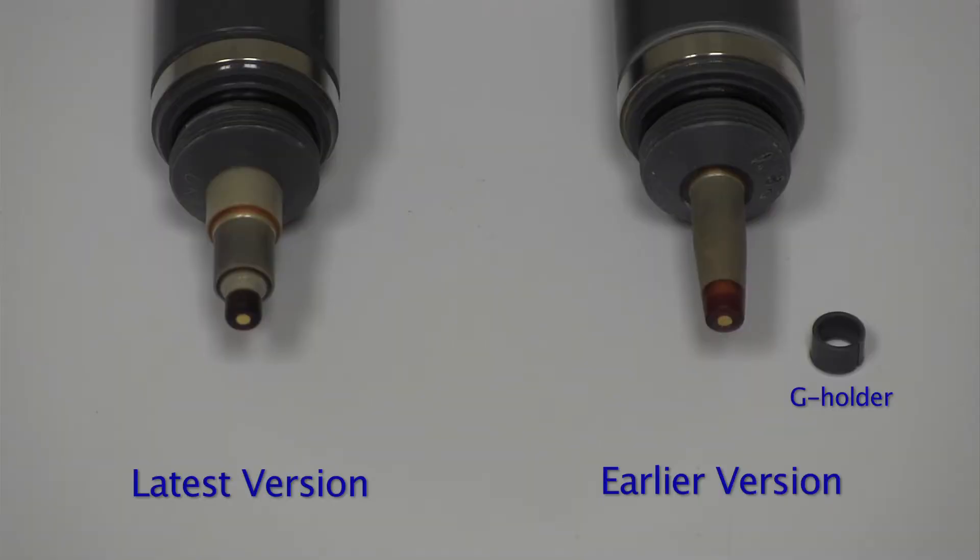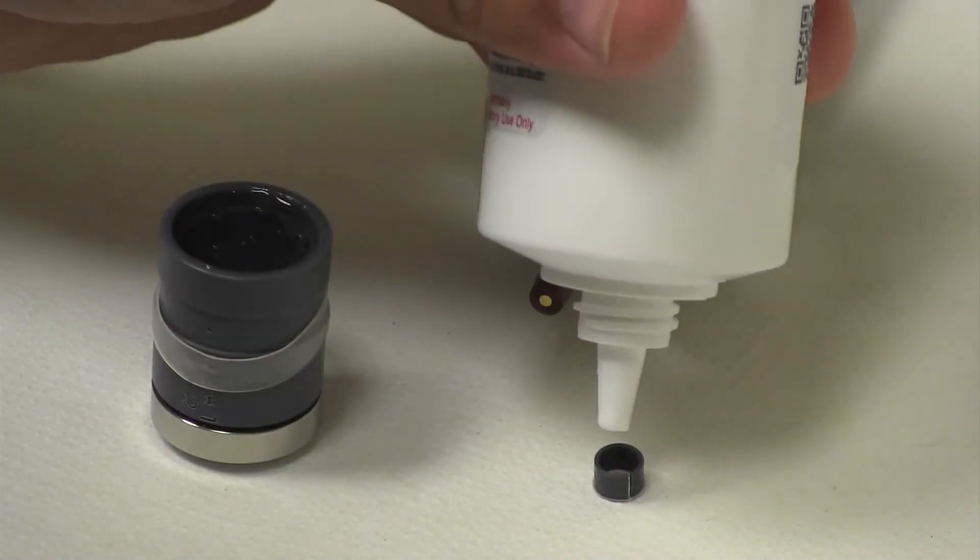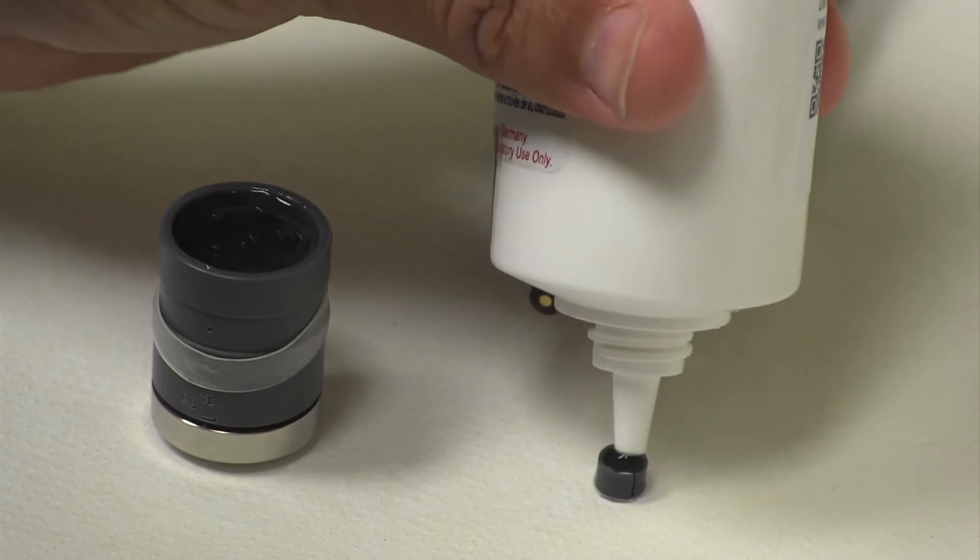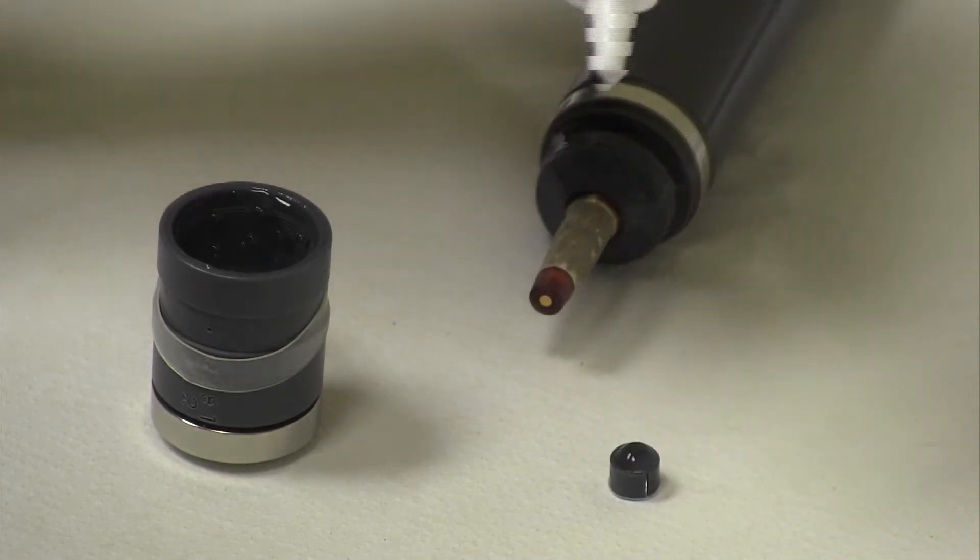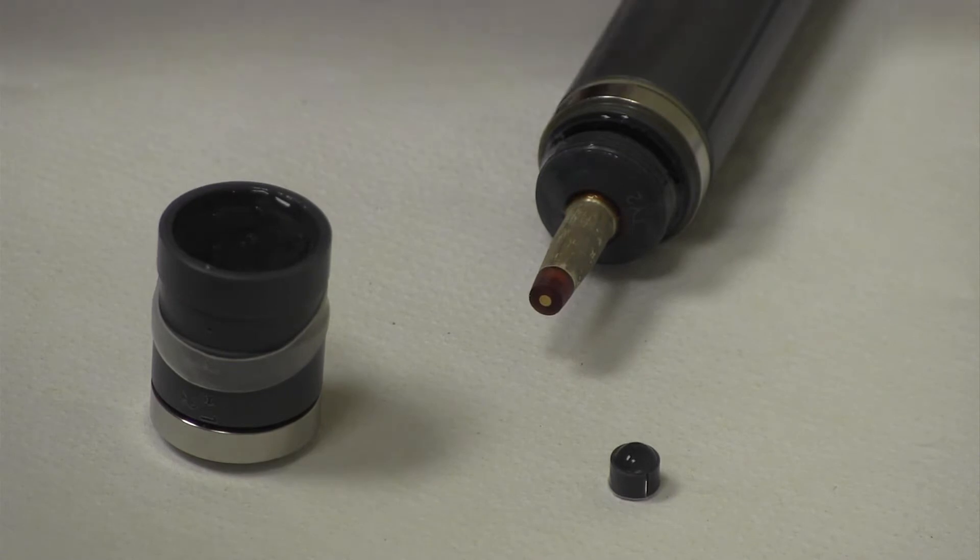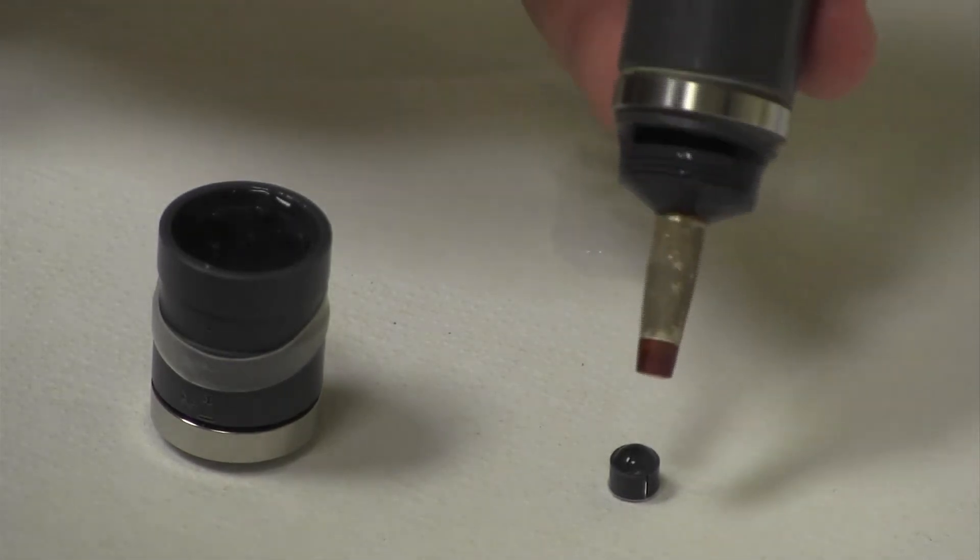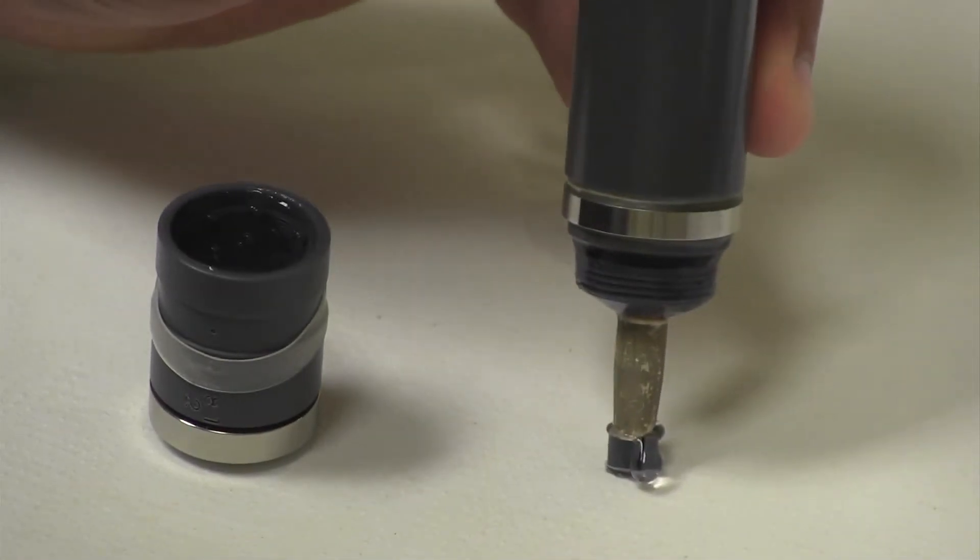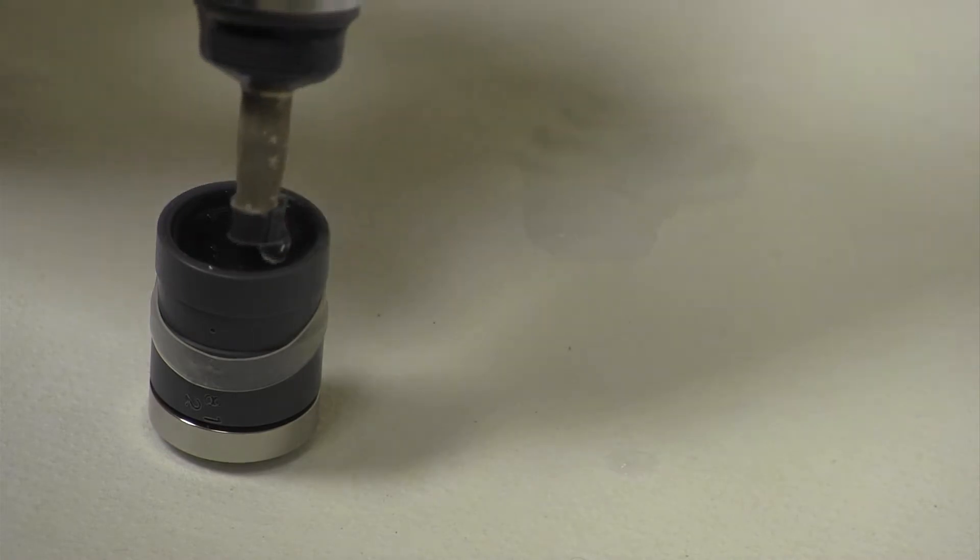For some earlier free chlorine probe models, an additional much smaller cap, referred to as a G-holder, was required and included in the kit. For these models, before putting on the membrane cap, the G-holder is filled with electrolyte, and then the electrode tip is inserted into the G-holder. The probe, with the G-holder on the tip, is then inserted into the electrolyte-filled membrane cap.